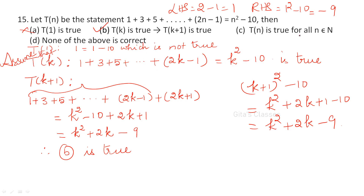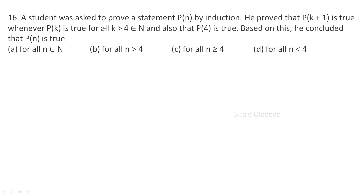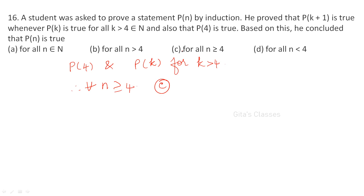Option C is not valid because for all n ∈ ℕ, T(1) is not true. T(k) true implies T(k+1) true is correct — only option B is satisfied. Next: a student proved P(k+1) is true whenever P(k) is true for all k > 4, and also that P(4) is true. Therefore he can conclude P(n) is true for all n ≥ 4, so the answer is C.